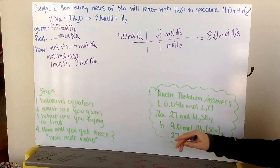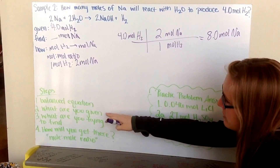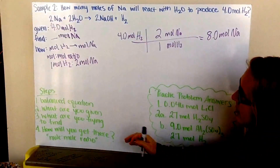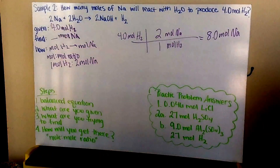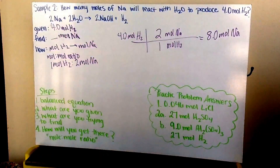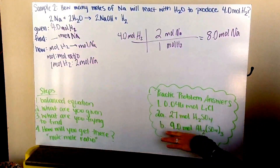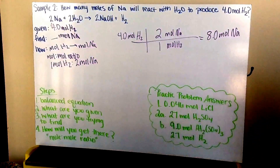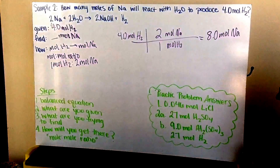The steps I followed were: first, have a balanced equation; then write down what you're given, what you're trying to find, and how you're going to get there. For all problems in part one, I used my mole-to-mole ratio. Go ahead and try your practice problems on the next page. Your answers for numbers 1, 2A, and B are listed. Use those steps from your textbook if you need to get to the correct answers.